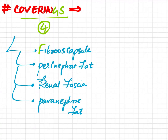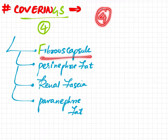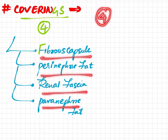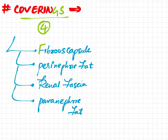In this video we'll be talking about the coverings of the kidney. We can see the four coverings of the kidney, namely the fibrous capsule, perinephric fat, renal fascia, and the paranephric fat. Now let us see each of these coverings in detail.